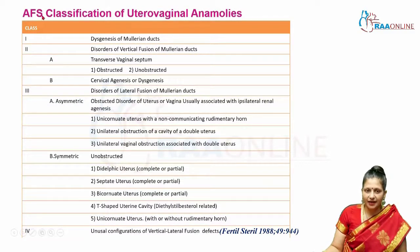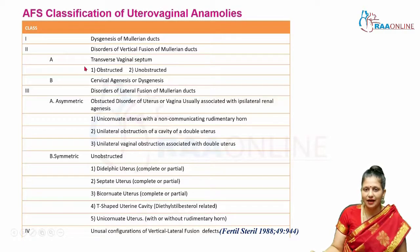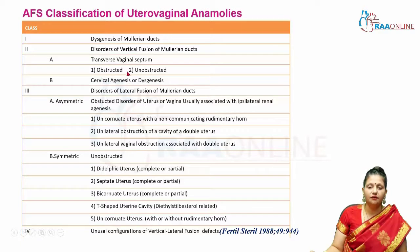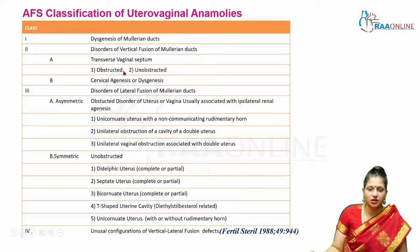The later AFS classification organizes anomalies differently. Class 1 is dysgenesis; Class 2 covers disorders of vertical fusion, including transverse vaginal septum and cervical agenesis or dysgenesis. The transverse vaginal septum is further classified as obstructive or non-obstructive, because the obstructive type leads to hematocolpos, hematometra, and hematosalpinx, presenting as cryptomenorrhea — where the patient menstruates but blood collects within the reproductive tract. Excising an obstructive septum relieves symptoms. Cervical agenesis or dysgenesis also falls under vertical fusion disorders.